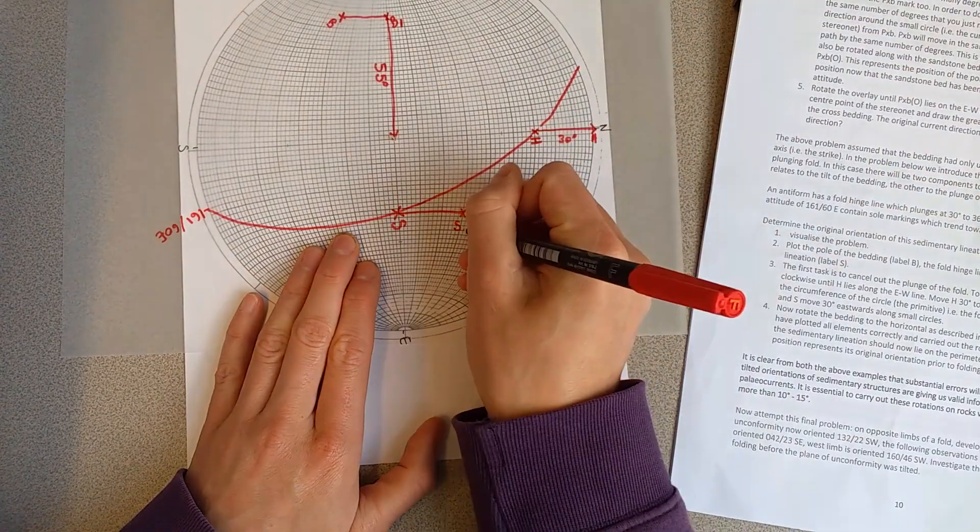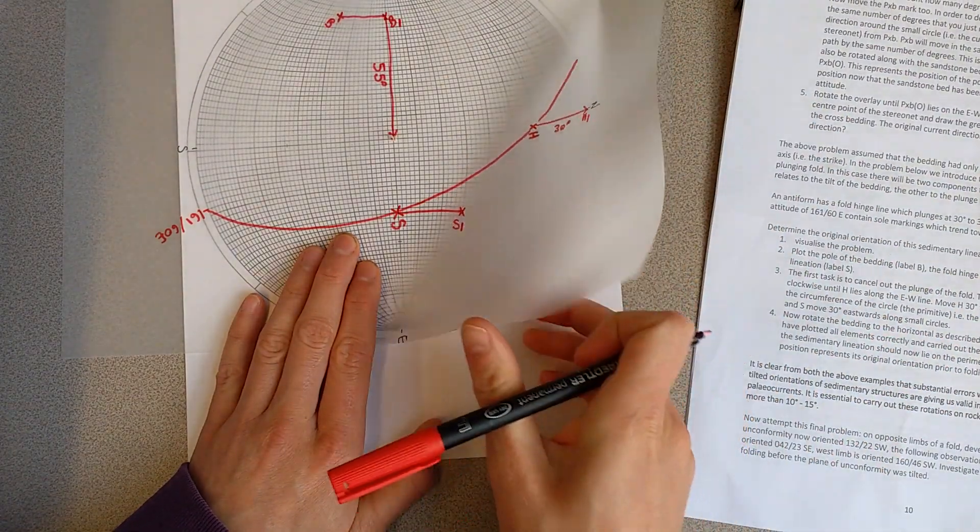So I'm going to call these bedding one, sole one, and H one after that was moved.